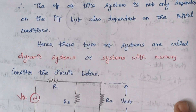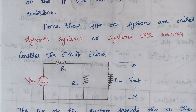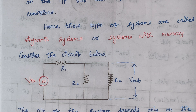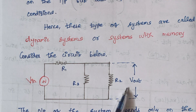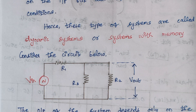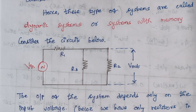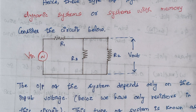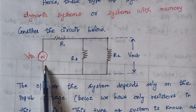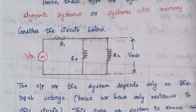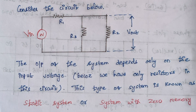Moving to another circuit — here we are having a circuit with all resistors, no inductor, no capacitor. Again here we are having input voltage and we need to calculate the output voltage. In this case, the output voltage of the system depends only on the input voltage, because we are having only resistors. So this type of system is known as a static system or system with zero memory.